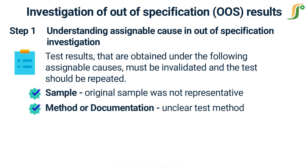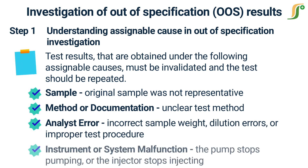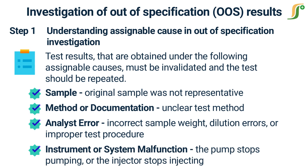Second: unclear test method or standard operating procedure directions which resulted in incorrect test execution. Third, analyst error — examples include but are not restricted to the incorrect weight of the sample used, sample or sample solution spills, dilution errors, or improper test procedure. Fourth, instrument or system malfunction — examples include but are not restricted to interfering electrical surges or spikes, the pump stops pumping, or the injector stops injecting.